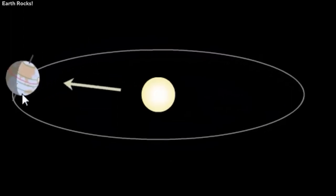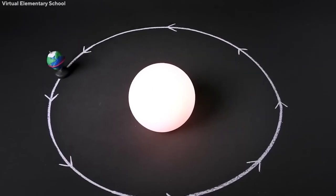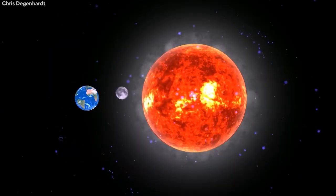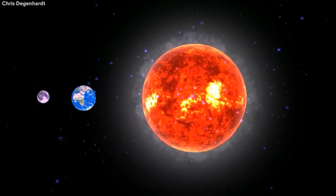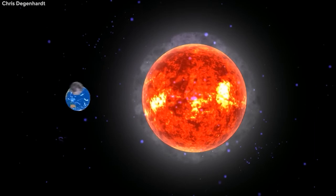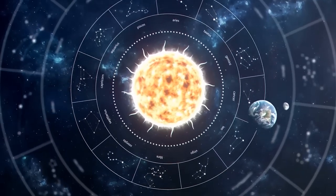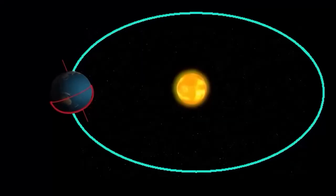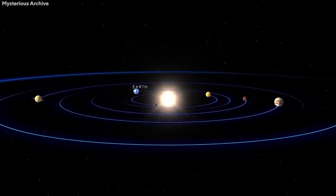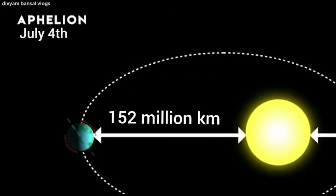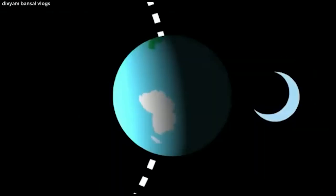Many people assume seasons occur due to Earth's elliptical orbit around the sun, with winter occurring when Earth is farthest from the sun and summer when it's closest. However, Earth's distance from the sun has little effect on the onset of seasons. In fact, Earth is closest to the sun — at its perihelion — around the winter solstice in the northern hemisphere, and farthest from the sun — at its aphelion — around the summer solstice.